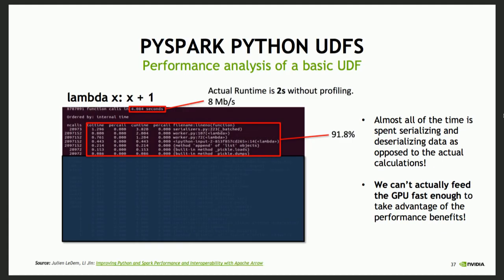This bottleneck is real. Here's a really simple example of a UDF that's just adding one — you can see 91.8% of the time is actually spent in serializing and deserializing the data, essentially pickling and moving data as opposed to actually doing the compute. This talk is about GPU accelerating PySpark UDFs. If we're spending 92% of our time in just serialization, deserialization, and moving data, we can't feed the GPUs fast enough to take advantage of the computing power they offer.